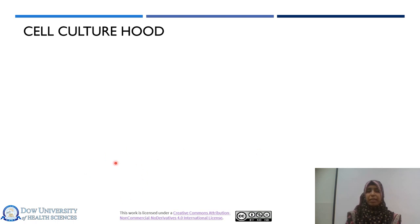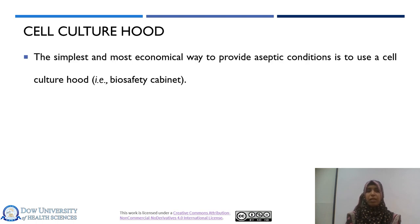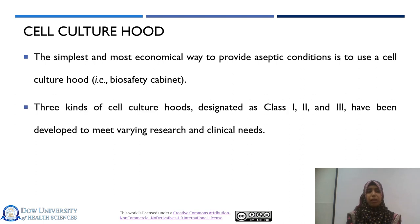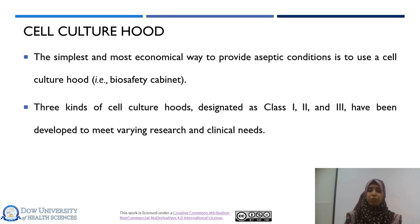The first basic equipment in a cell culture lab is the cell culture hood. The simplest and most economical way to provide aseptic conditions is to use a biological safety cabinet. These safety cabinets are categorized into three classes: class one, two, and three. The choice depends on whether you need product safety, environmental safety, personal safety, or all three.